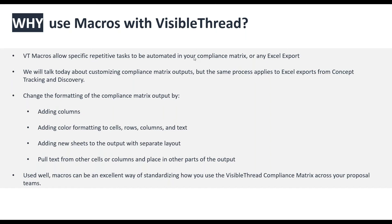Used well and correctly, macros can be an excellent way of standardizing how you utilize the VisibleThread compliance matrix across your proposal teams. In many organizations, one person generates a compliance matrix and performs a specific set of tasks — hiding columns, applying formatting — tasks that may only take three or four minutes each. But if they're generating five to twenty matrices a month, and have a team of similar size doing the same, automating it saves time, reduces errors, and makes onboarding easier.